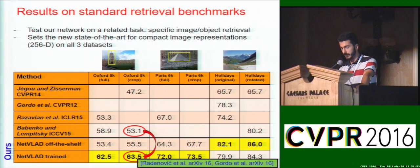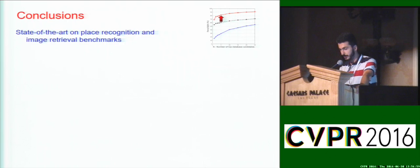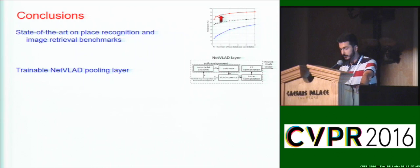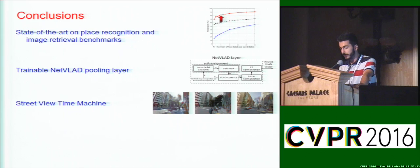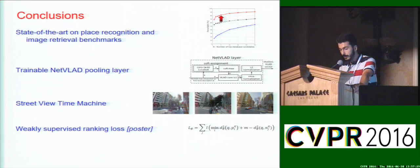There have been very recently new works appearing on arXiv that obtain even better results on these retrieval benchmarks by using stronger supervision. To conclude, we set the new state-of-the-art on place recognition and image retrieval benchmarks. We introduced a trainable NetVLAD pooling layer, which works significantly better than max pooling for place recognition, can be plugged into other CNN architectures, and potentially used for tasks other than place recognition. We also introduced a new large source of information, the Street View Time Machine, which comes with weak annotations and could potentially be used to train image representations from scratch. Finally, we introduced the weakly supervised ranking loss, which enabled us to make use of the Time Machine data and is applicable beyond place recognition. All code for the NetVLAD layer, training, testing, as well as the trained networks are freely available online.